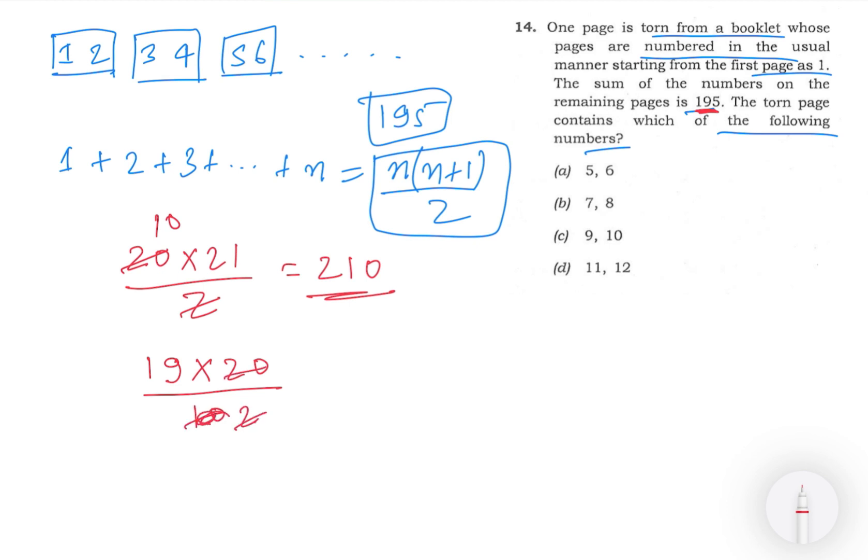So this is 2 and this is 10. It means 190. So now we know that when n value is 19, we have sum 190.